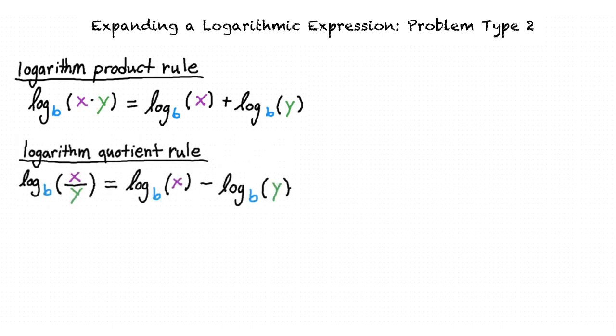The logarithm quotient rule says that the base b logarithm of x divided by y is equal to the base b logarithm of x minus the base b logarithm of y.